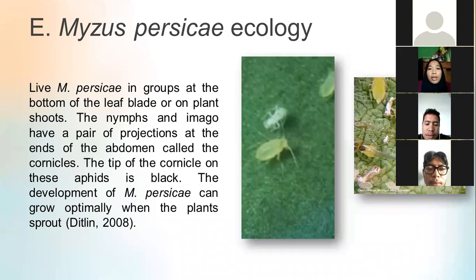Myzus persicae ecology: They live in groups at the bottom of the leaf blade or on plant shoots. The nymphs and imagos have a pair of projections at the ends of the abdomen called cornicles. The tip of the cornicle on this aphid is black. The development of Myzus persicae can grow optimally when the plant is in a productive growth phase.